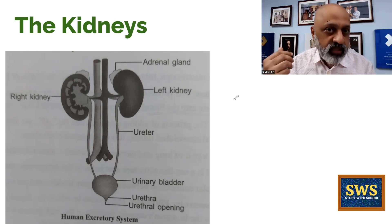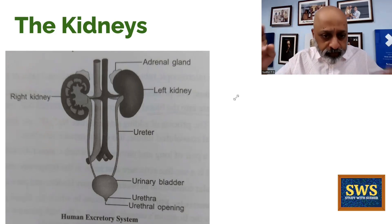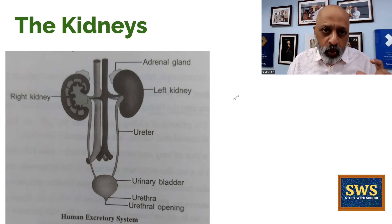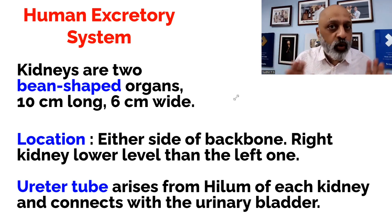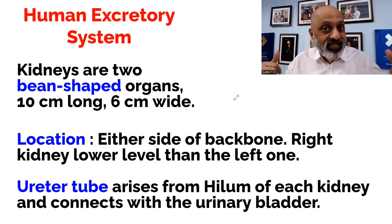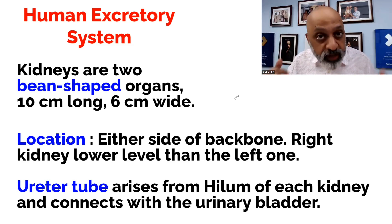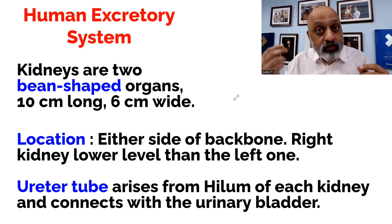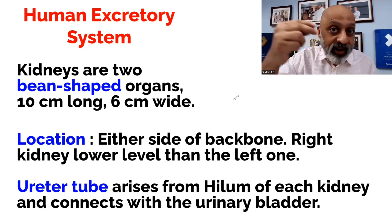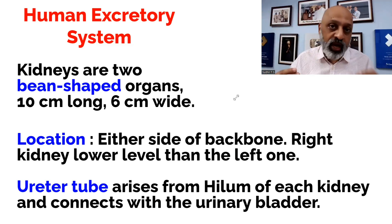There are two kidneys in the human body, and they join via the ureter to the urinary bladder. Kidneys are essentially two bean-shaped organs which are 10 centimeters long and 6 centimeters wide in an adult body. They are located on either side of the backbone, and the right kidney is at a slightly lower level than the left one. The ureter tube connects the kidneys to the urinary bladder and arises from the hilum (H-I-L-U-M).